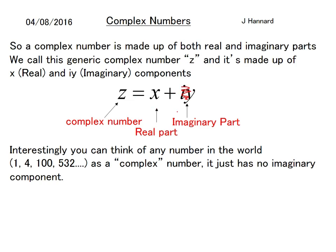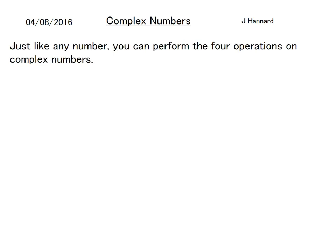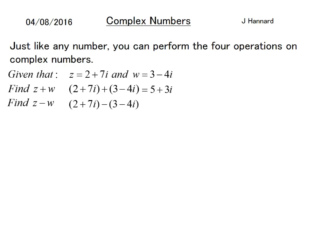Just like any number, you can perform the four operations on complex numbers. Given that z = 2 + 7i and w = 3 - 4i, find z + w. We just add together the real parts and imaginary parts and get 5 + 3i. It's just like 2 + 7x add 3 - 4x, collecting like terms. z - w is exactly the same, just take away like terms, careful of double negatives, and you get -1 + 10i.